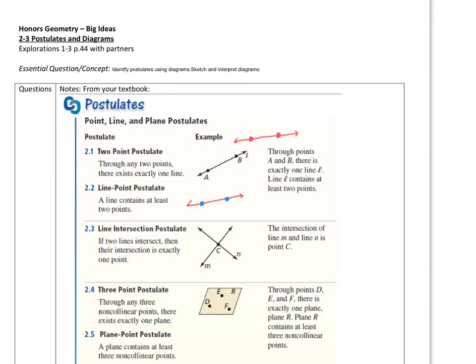The next one is called the line intersection postulate. If two lines intersect, then their intersection is exactly one point. So as long as I have two intersecting lines, you need to know that they intersect in one point. A lot of these are postulates because they're pretty obvious. There's no real way of explaining these, and they have to be the way they are.